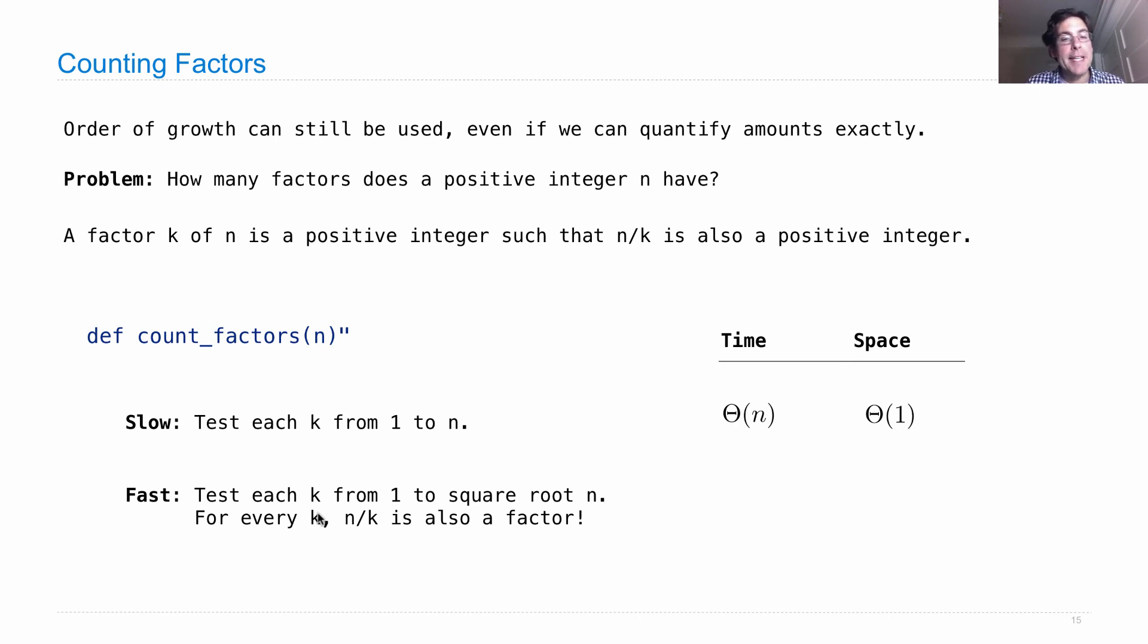What about the version where we test each k from one to the square root of n? That's theta square root of n. We don't need to figure out whether it's the floor or worry about any constants anymore. The only thing we need to worry about is that the time it takes grows on the order of square root of n with constant space.